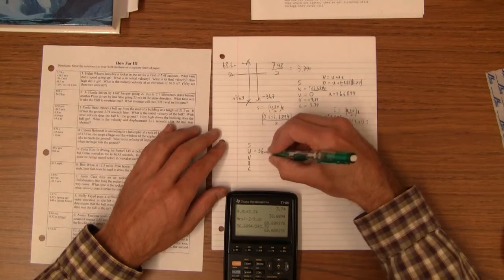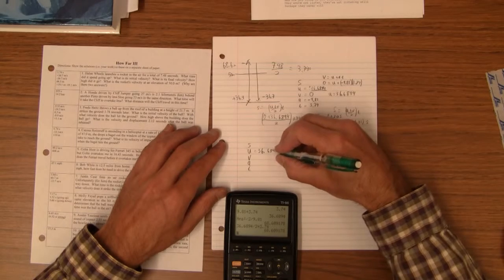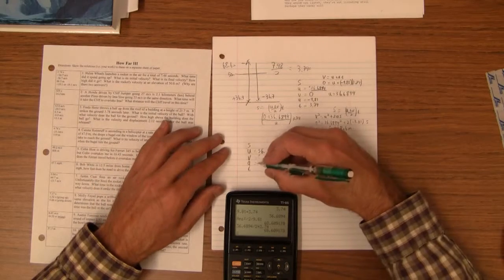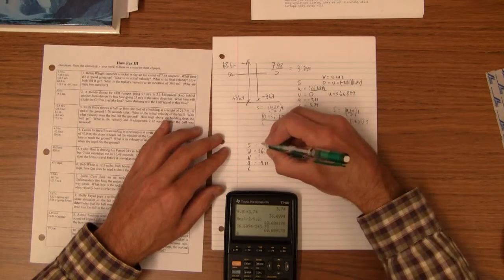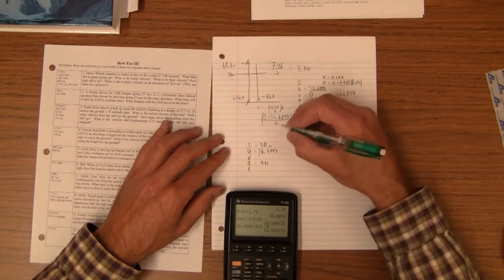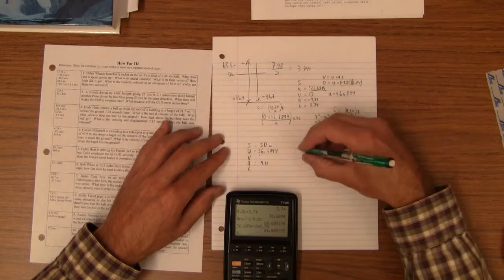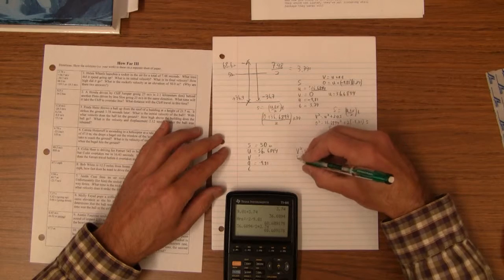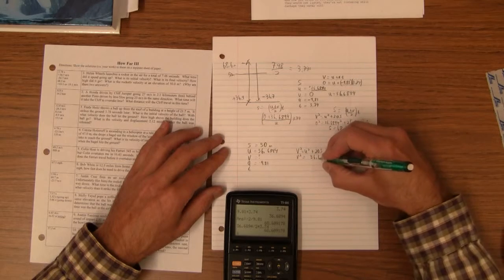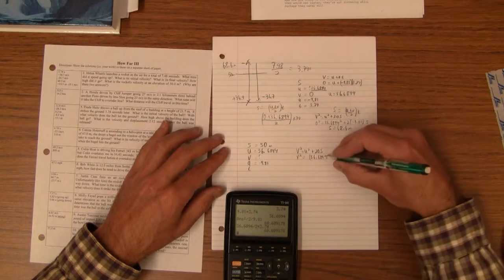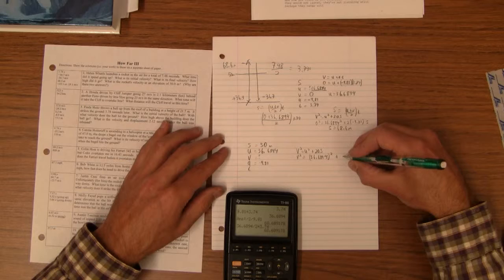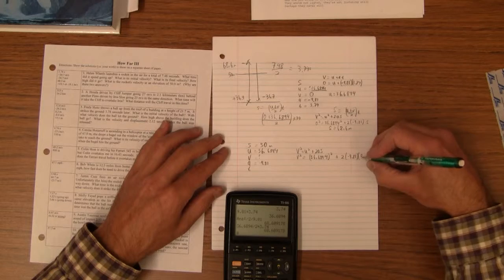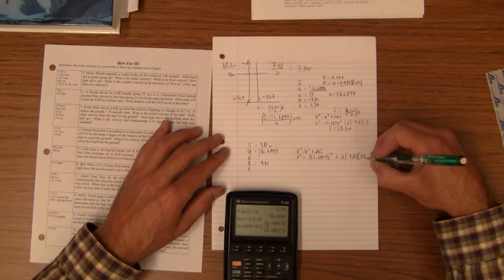U is 36.6894. Final velocity, we don't know. It's not 0 because we're not at the top. Negative 9.81. S is 50, we do know that. We want to know what it is at 50 meters. I'm going to use our friend V squared is U squared plus 2AS. So, V squared is 36.6894 squared plus 2 times negative 9.81 times 50 meters.